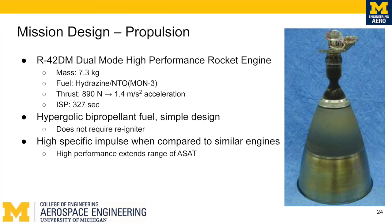Our ASAT will be propelled by an R42DM Aerojet high-performance rocket engine. It is a simple, low-mass engine due to its hypergolic bi-propellant fuel design. Because hypergolic bi-propellant fuels only ignite on contact, the engine doesn't require a reigniter, keeping its mass to just 7.3 kilograms. The thrust of the engine is 890 newtons, propelling the ASAT with about 1.4 meters per second squared of acceleration in its initial burn, increasing as fuel is expended. The specific impulse of 327 seconds rivals that of cryogenic fuel-propelled engines — similar hypergolic engines struggle to break 310 seconds — which will greatly increase the range of our ASAT and decrease the cost to orbit.